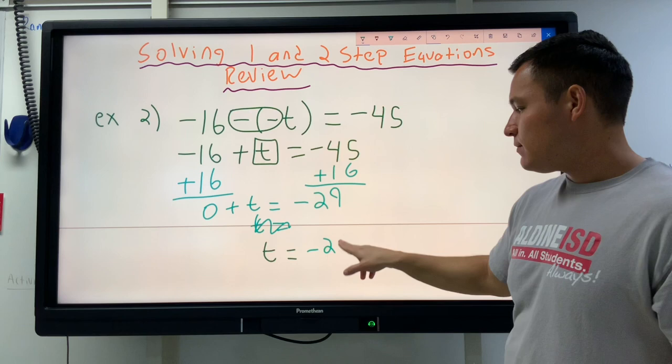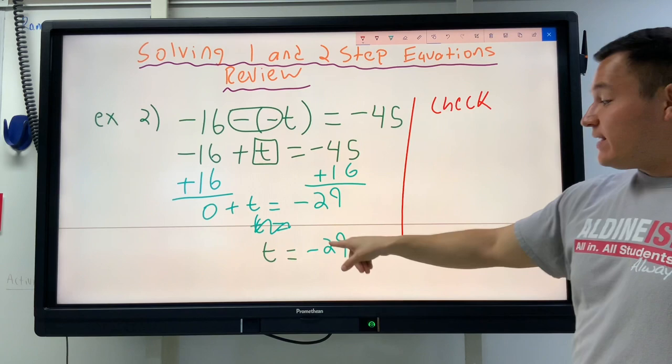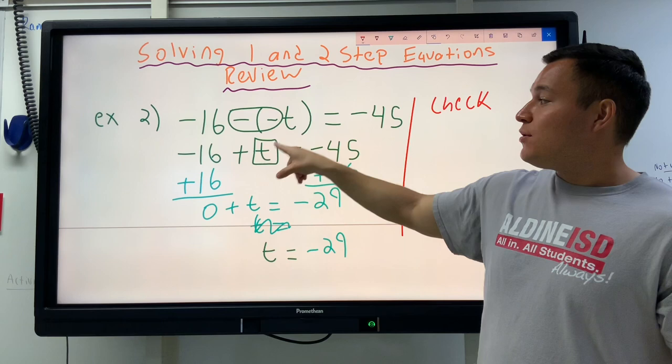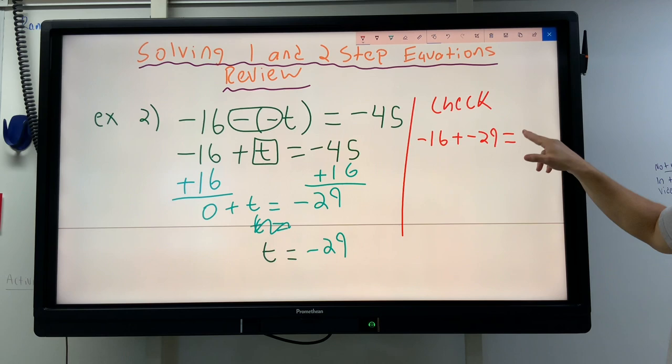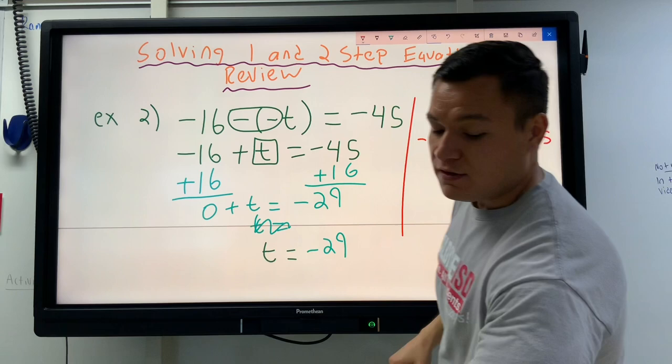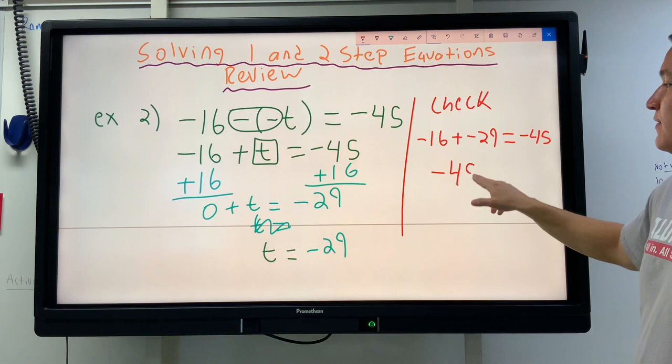But to make sure that we're actually done, we need to check it now. We're going to check to see if this is the right answer by taking this negative 29, which we said is equal to T, and we're going to put it where T was at the start. Negative 45 on your calculator, do negative 16 plus negative 29. That makes a negative 45 on the left, and that is equal to negative 45, which we wanted from the original question, so that's right.